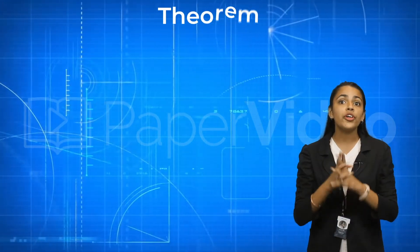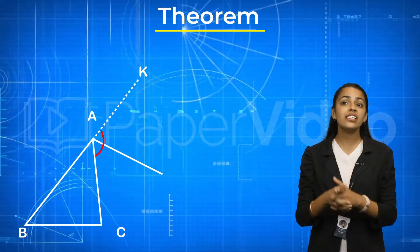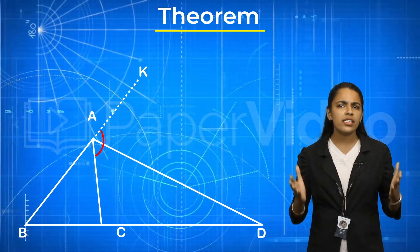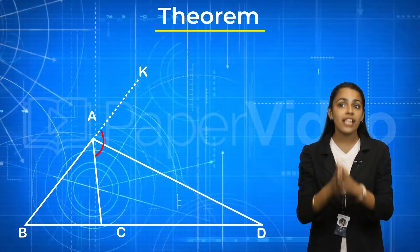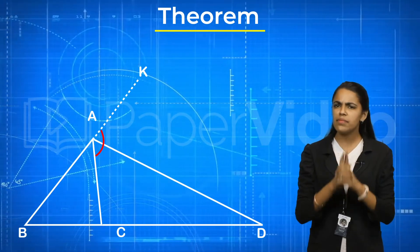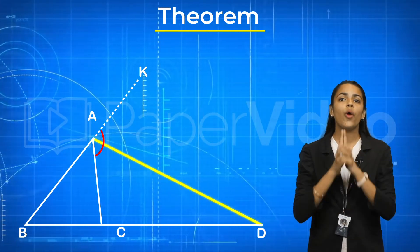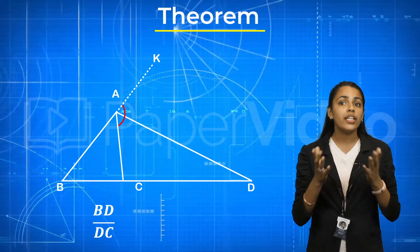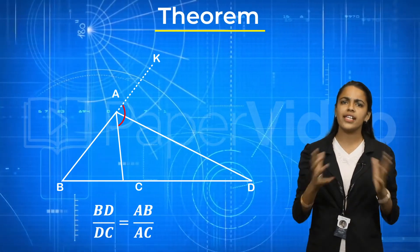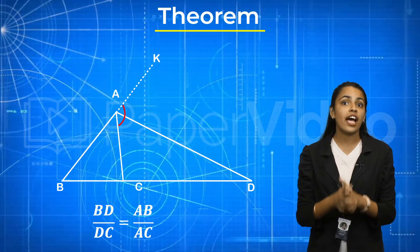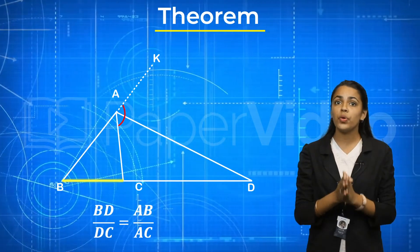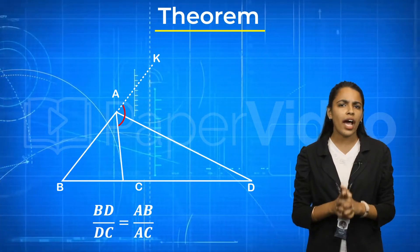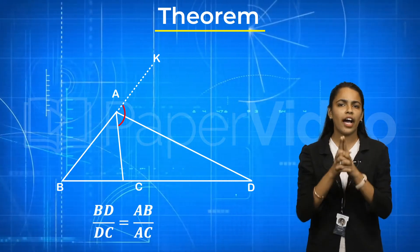Now let's come to the theorem. According to the theorem, the external bisector of an angle of a triangle divides the opposite side externally in the ratio of the sides containing the angle. This means that if AD is the bisector of the exterior angle A of triangle ABC, then BD upon DC equals AB upon AC. That is, AD divides side BC externally in the ratio equal to the ratio of these two sides. This is known as the theorem of external bisector angle of a triangle.